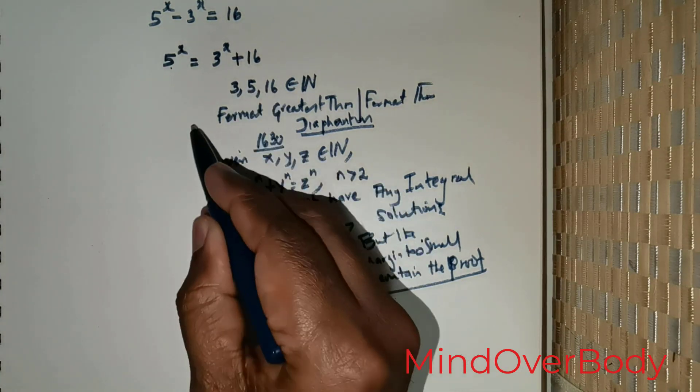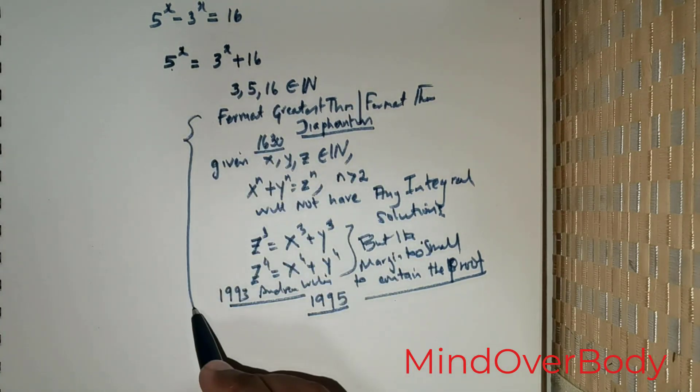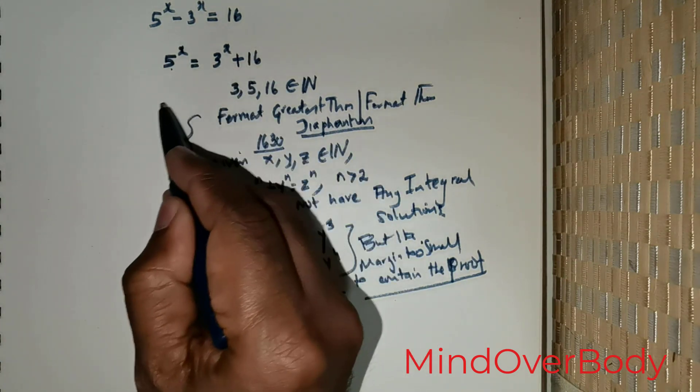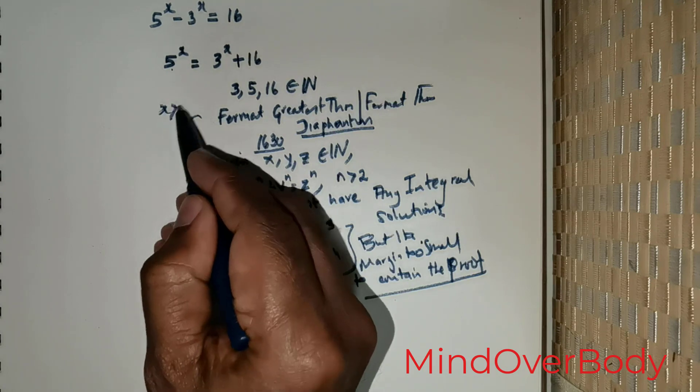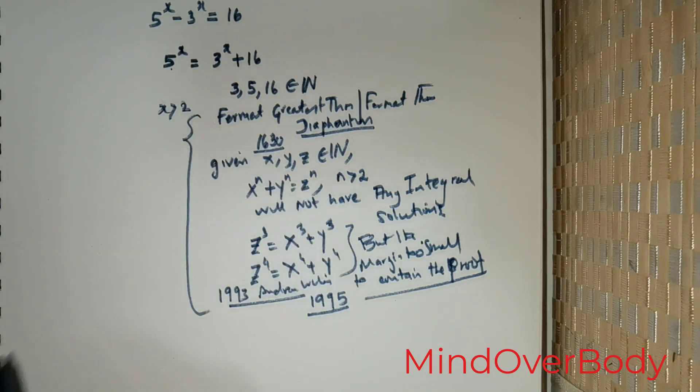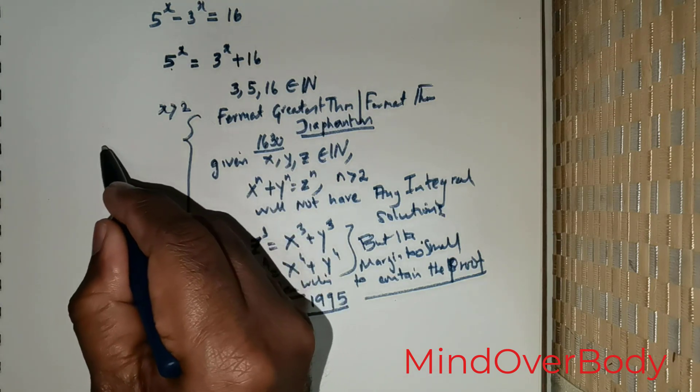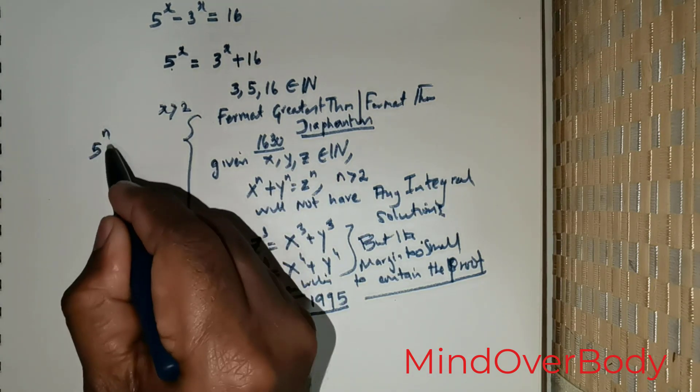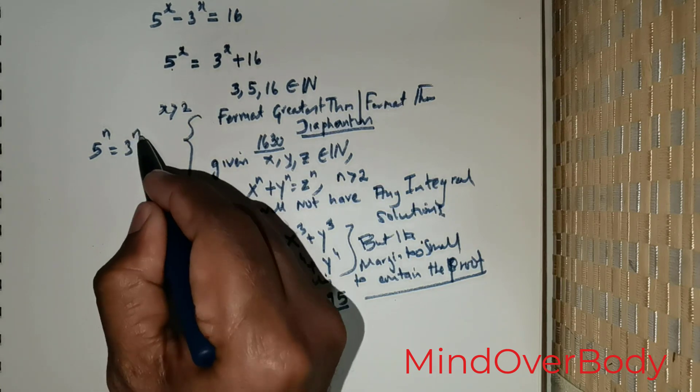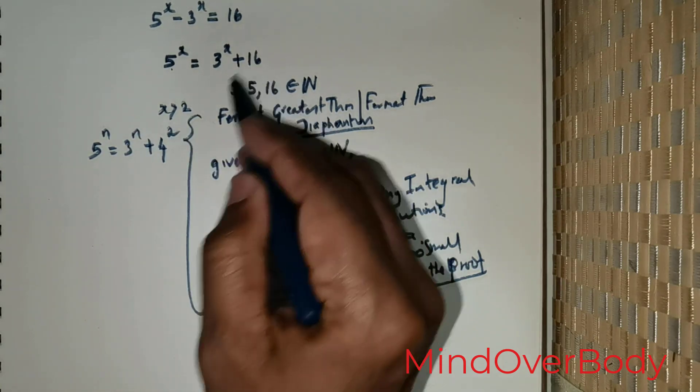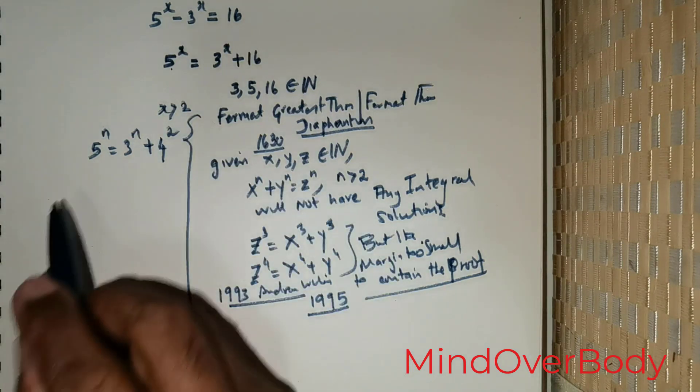3, 5, 16 to be natural numbers, then clearly x can never be greater than 2. If I were to rewrite this, I can rewrite this as 5^n = 3^n + 4^2. I am rewriting 16 as 4 squared.